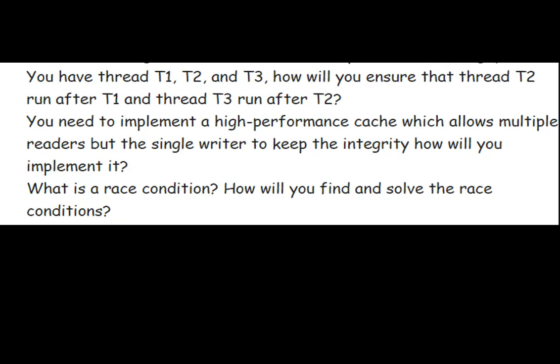The second multi-threading question: you need to implement a high-performance cache which allows multiple readers but a single writer to keep integrity - how will you implement it? This is a tricky question. There should be multiple readers but a single writer; you can go with ConcurrentHashMap here. What is a race condition and how will you find and solve it? Basically, when two threads compete to gain access to a resource, that scenario is known as a race condition. To solve it, we can use synchronized blocks and methods.